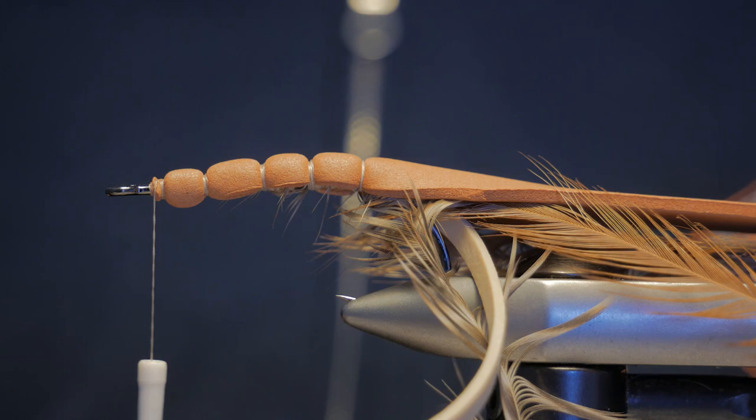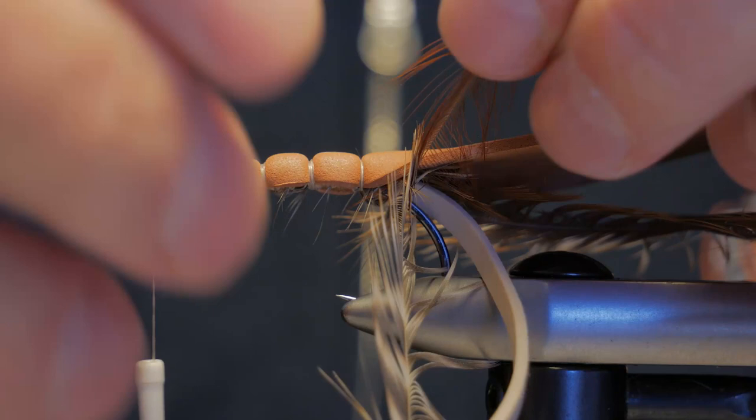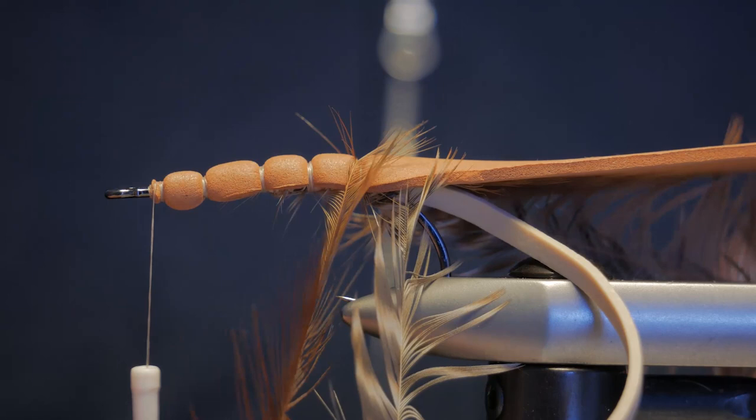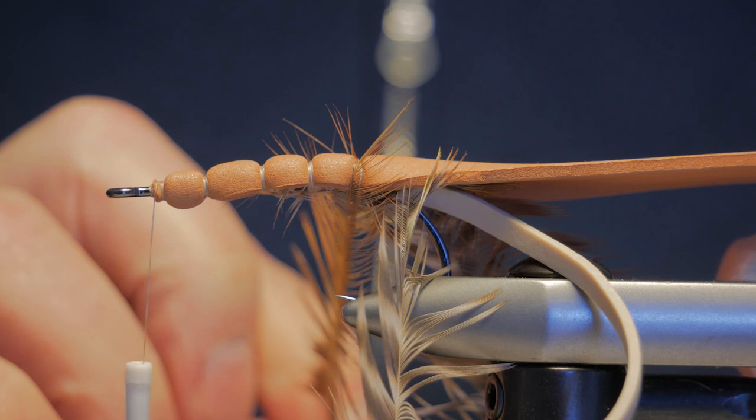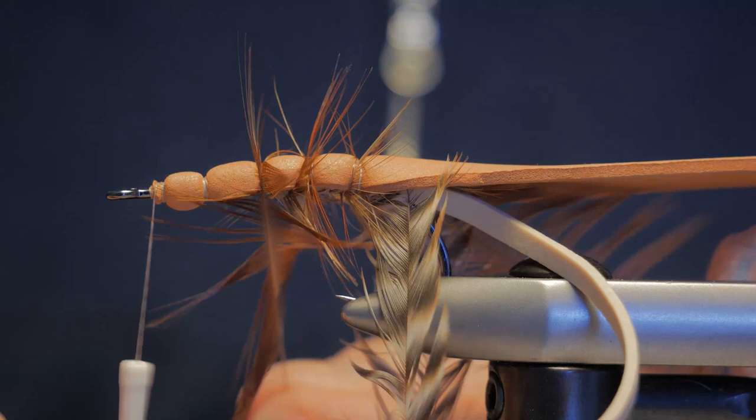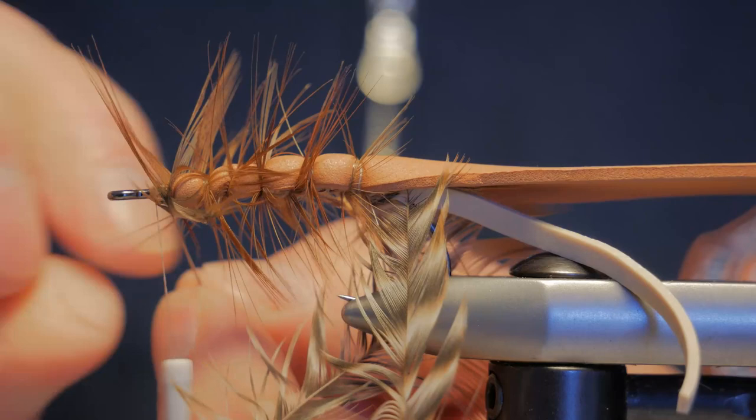Once you've got that, this is when we want to palmer the feathers. Take your first feather, in this case it's a brown one. You want to go around each tie-down point of the body and move to the next one. Do one complete turn there, move to the next one, and then to the front. If it looks messy, that's okay. In fact, you want it a little bit messy.